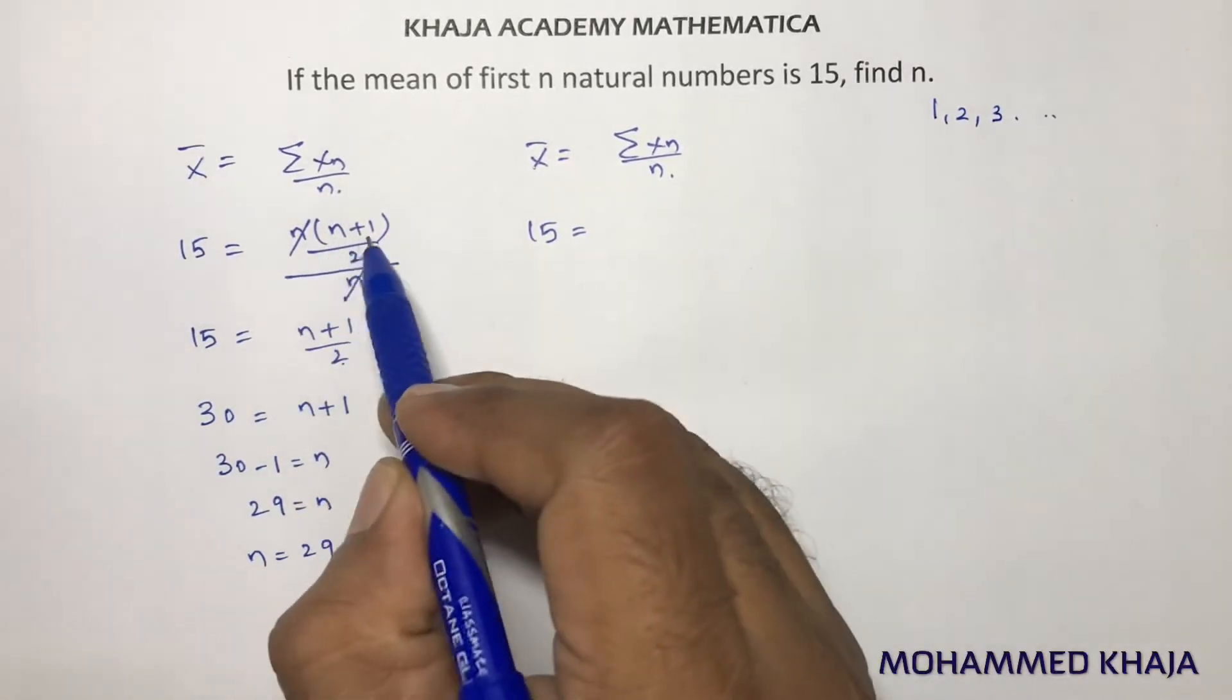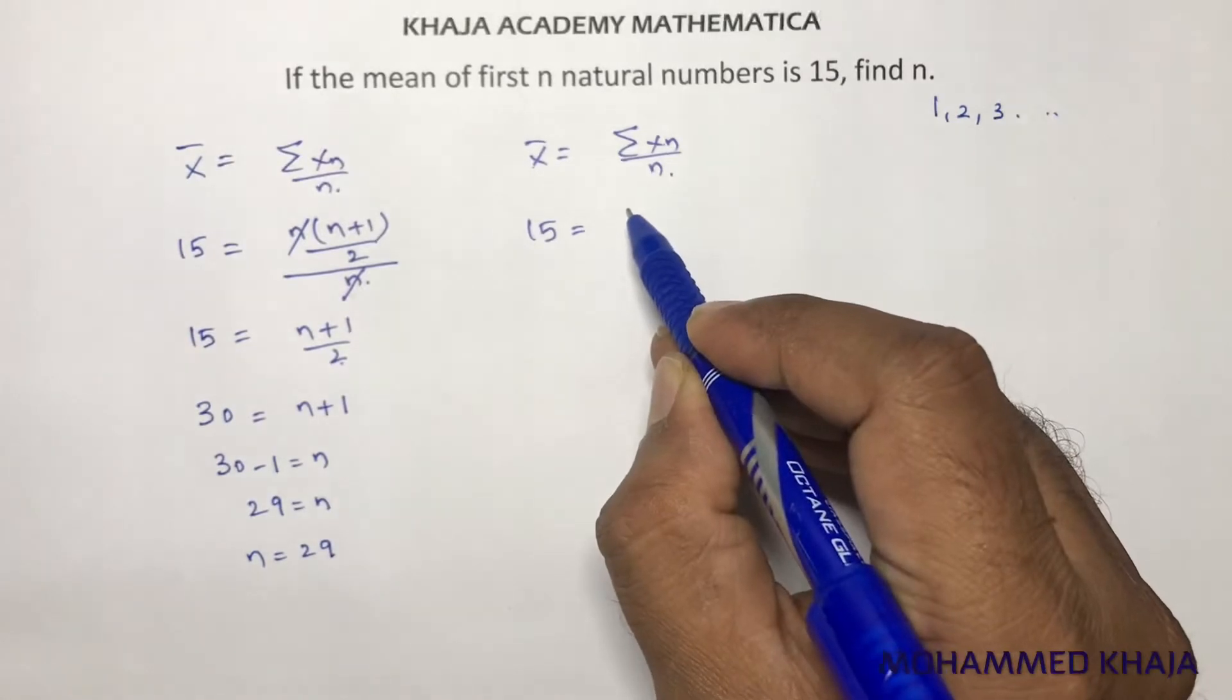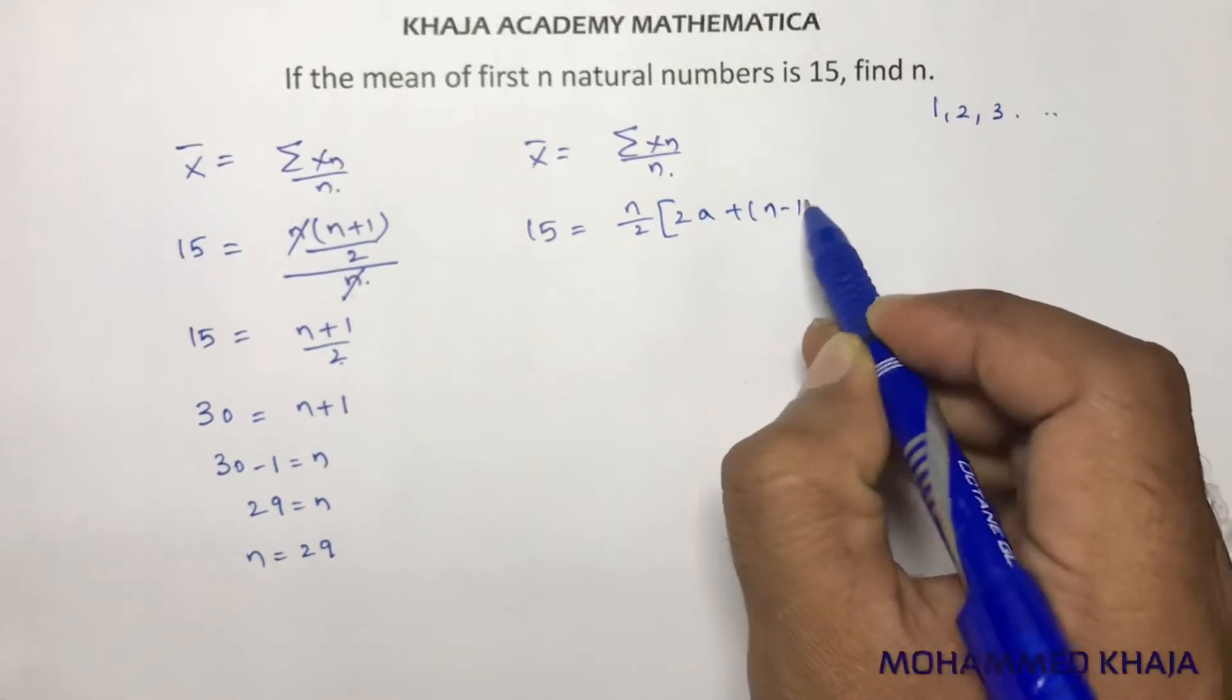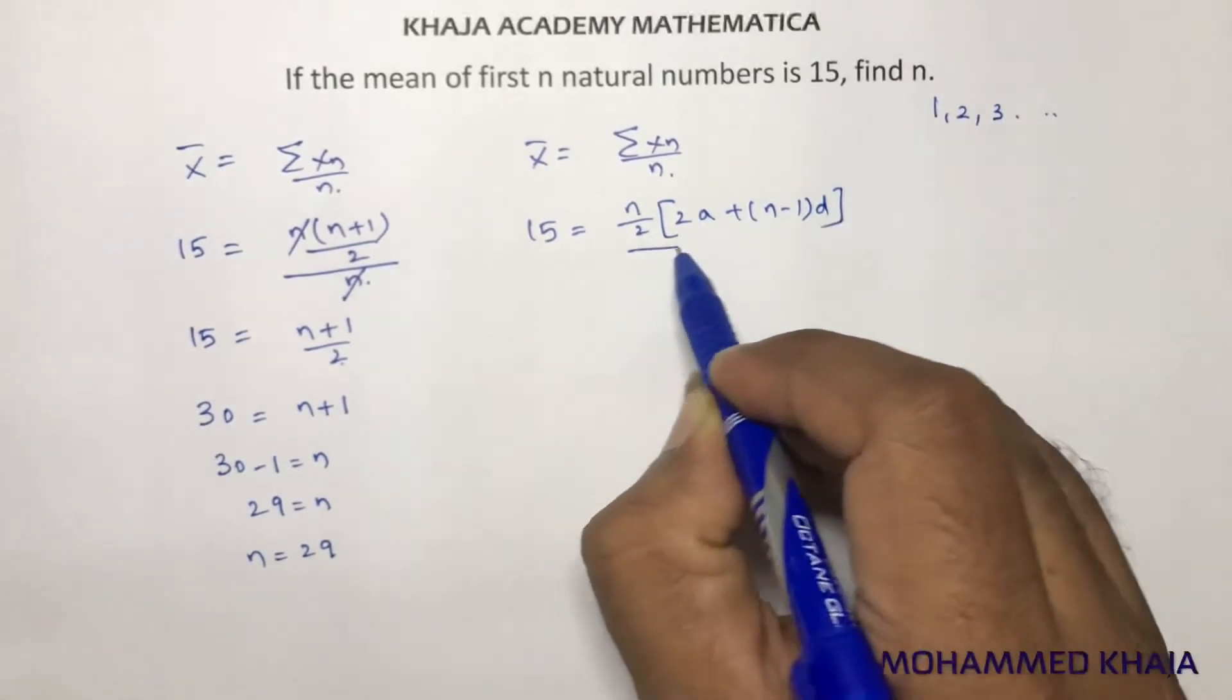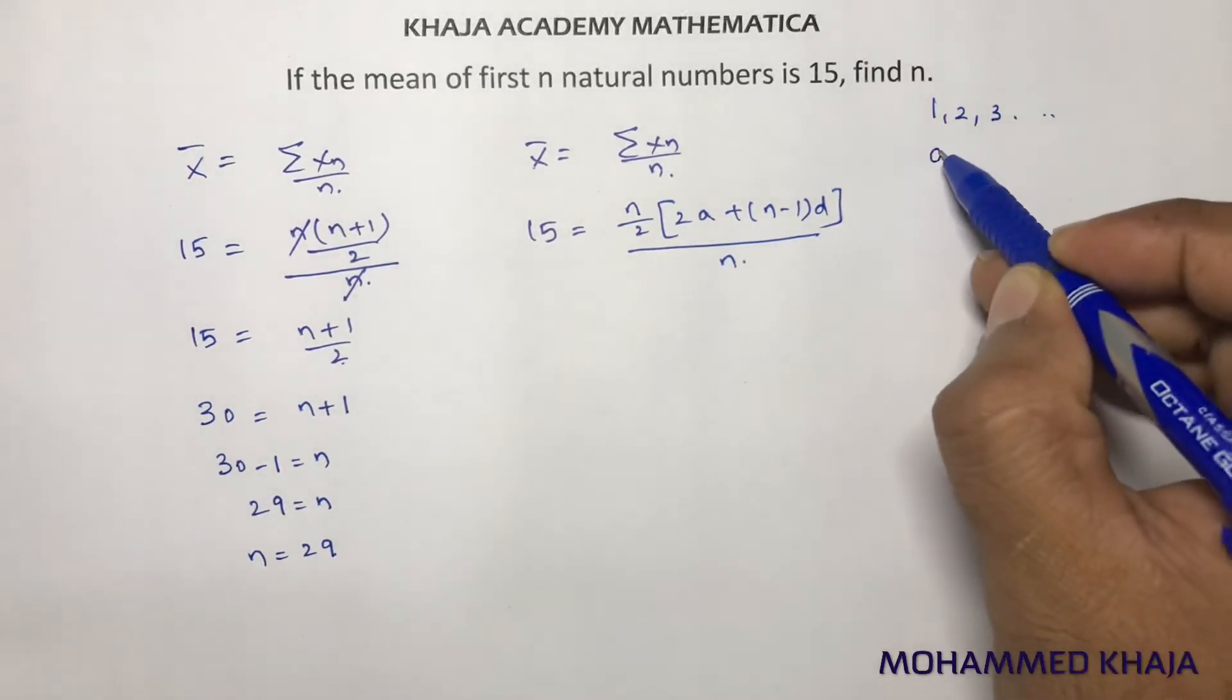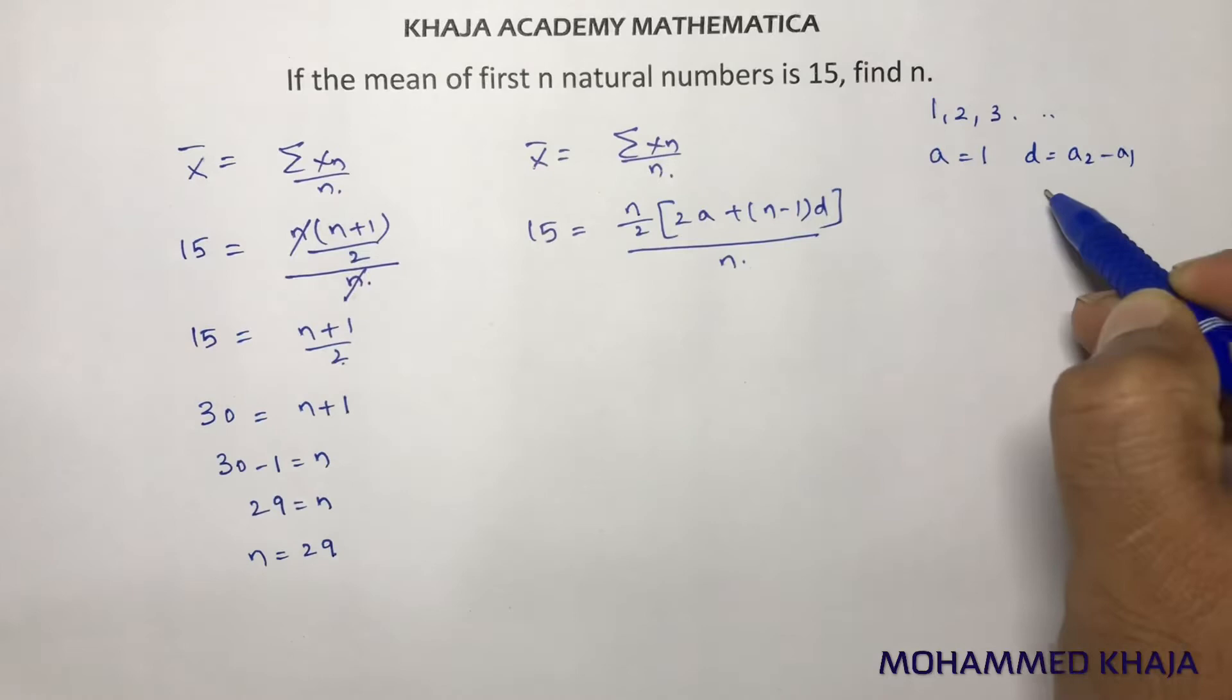Here I used the Gauss formula. But if you don't want to use it, you can use the formula for sum of n natural numbers: n by 2 into 2a plus n minus 1 into d, divided by n. In this series, a is 1, and d is a2 minus a1, which is 2 minus 1, which equals 1.